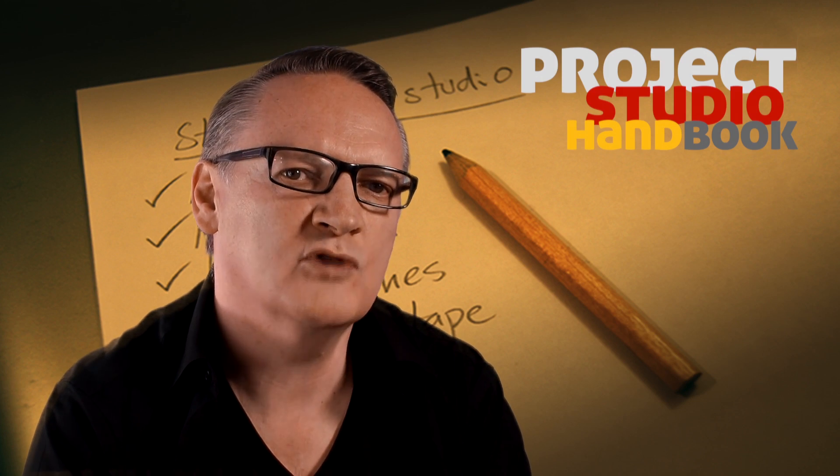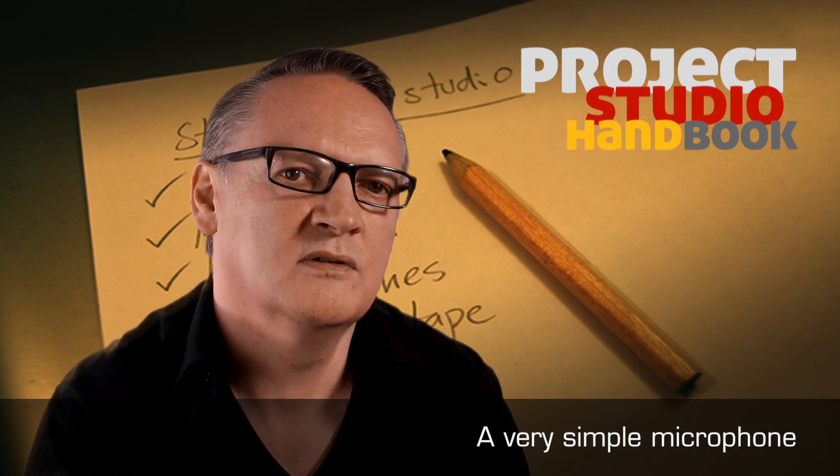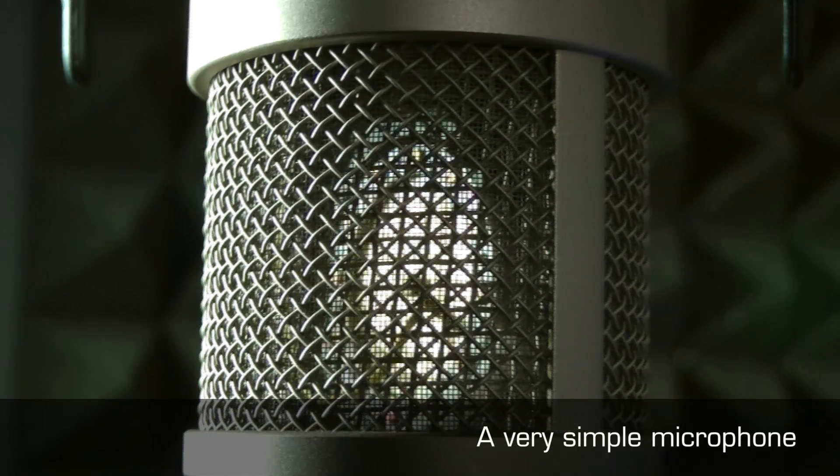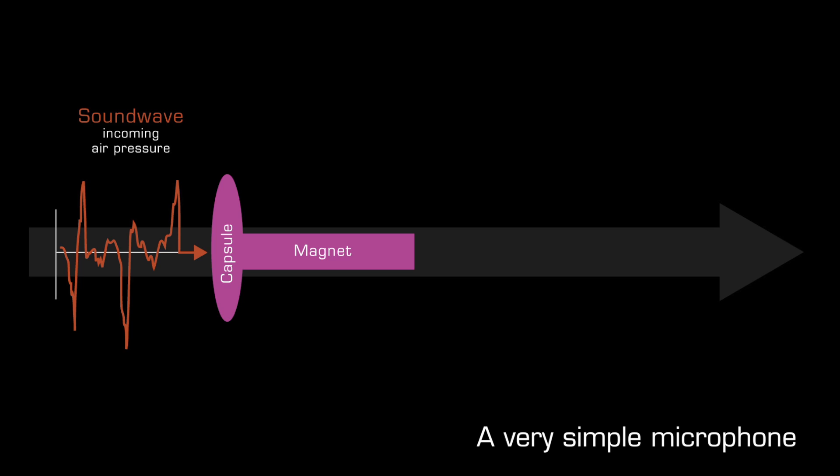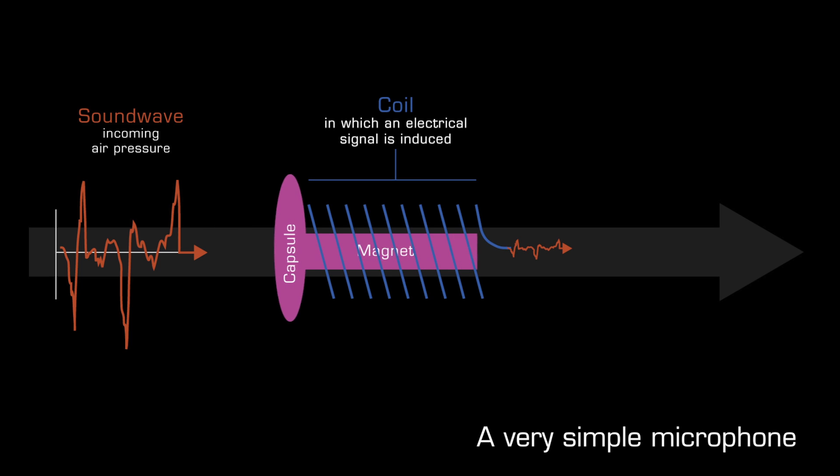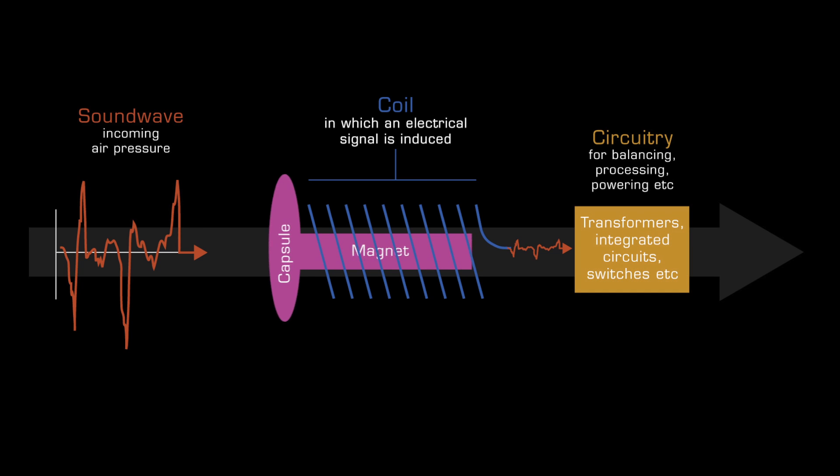Almost all microphone transducers comprise the following elements: a sensitive component such as a diaphragm or thin metal foil ribbon which responds to an incoming air pressure sound wave by moving, a surrounding coil which responds to this movement by generating an electrical signal, and some electronics to power the transducer, balance the signal and send it safely on its way to the microphone pre-amplifier.